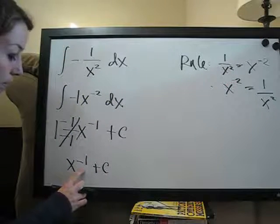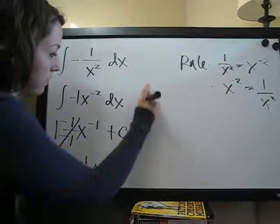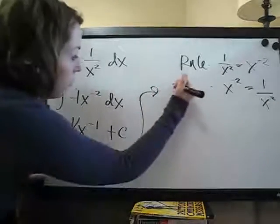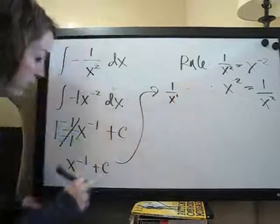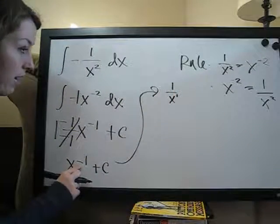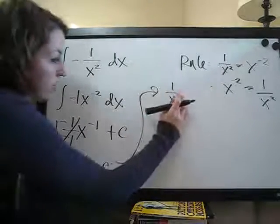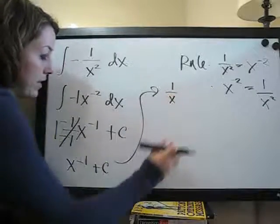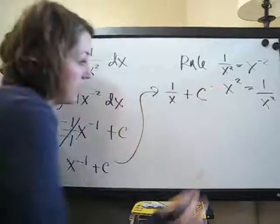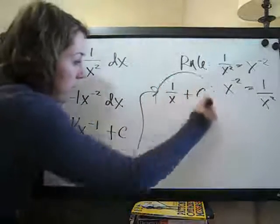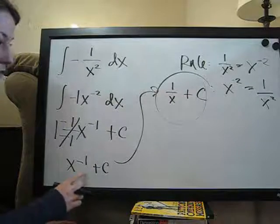So, this negative 1, we can change this to be 1 over x to the 1 by changing this from a negative to a positive. We put it on the bottom. And, of course, we don't need 1 as an exponent, so we can just get rid of that. So, it's 1 over x plus c, and that is our final answer, which is much prettier than this.